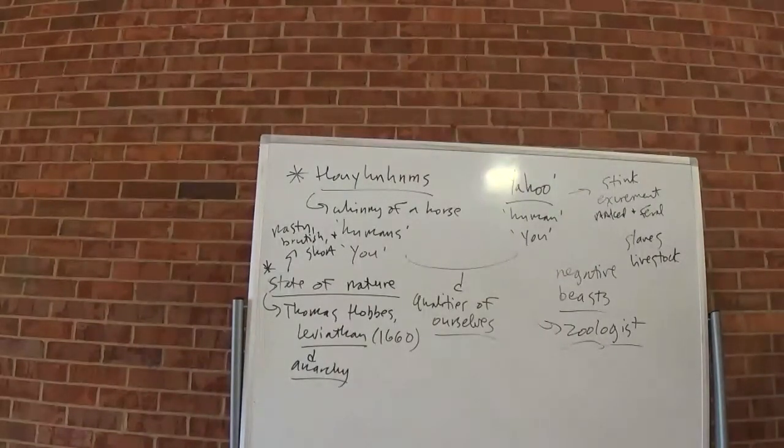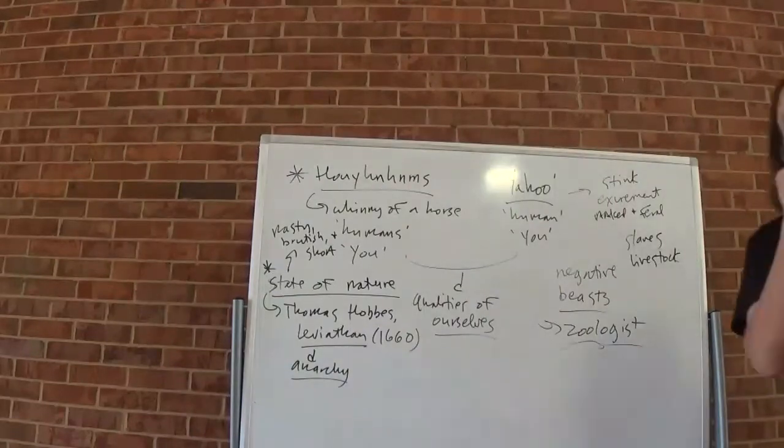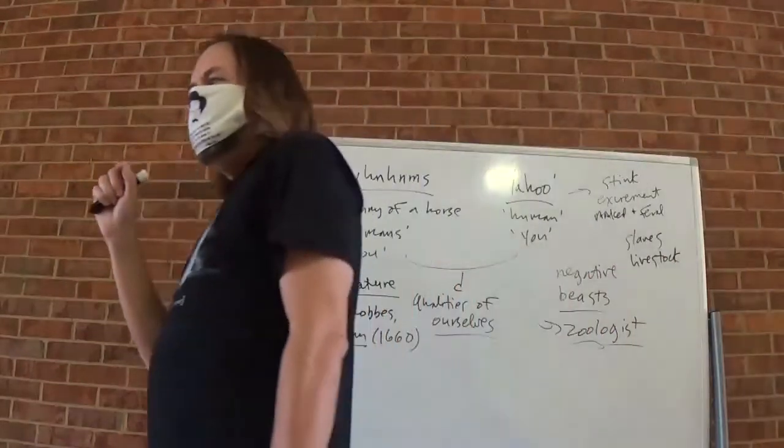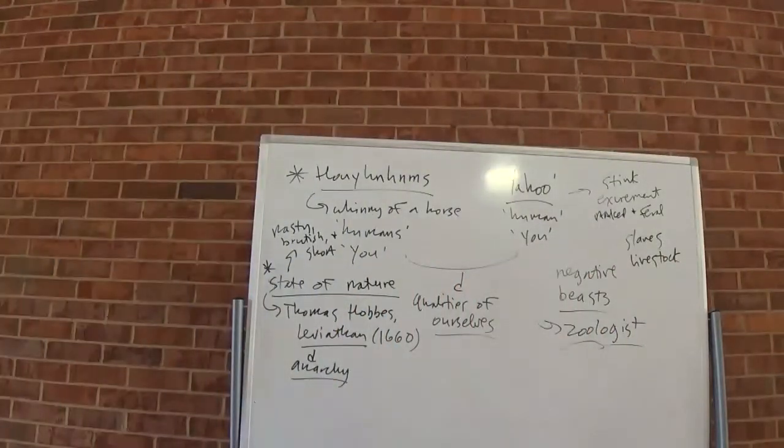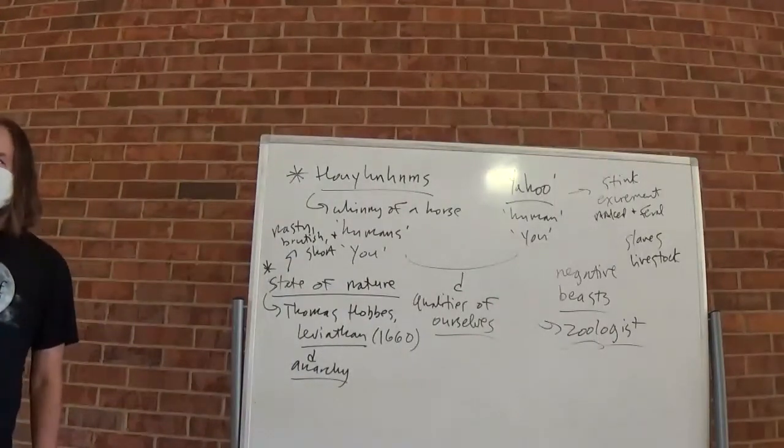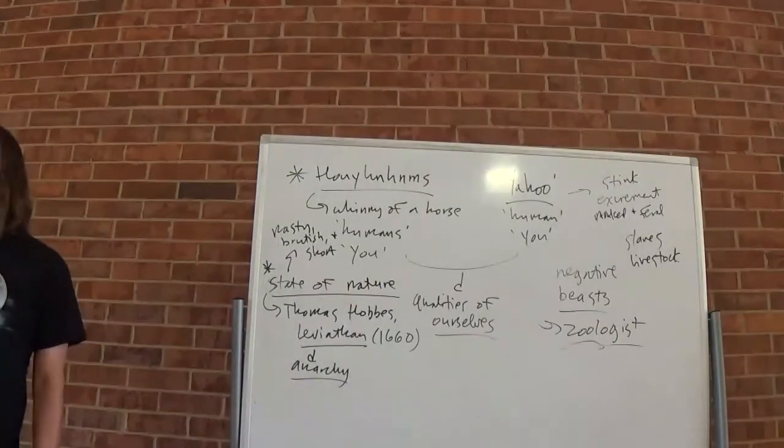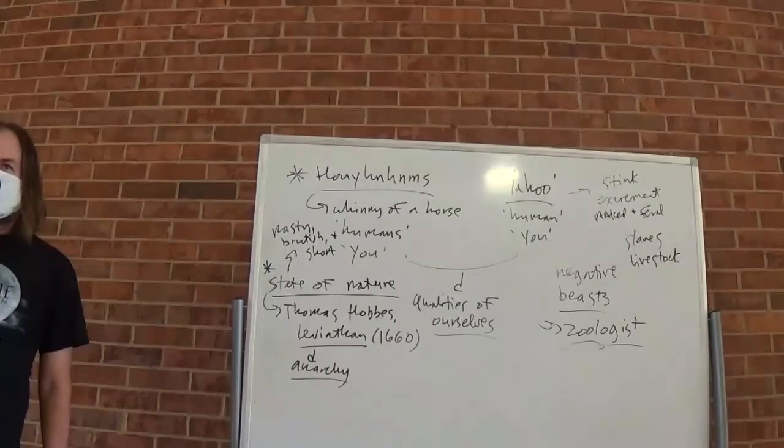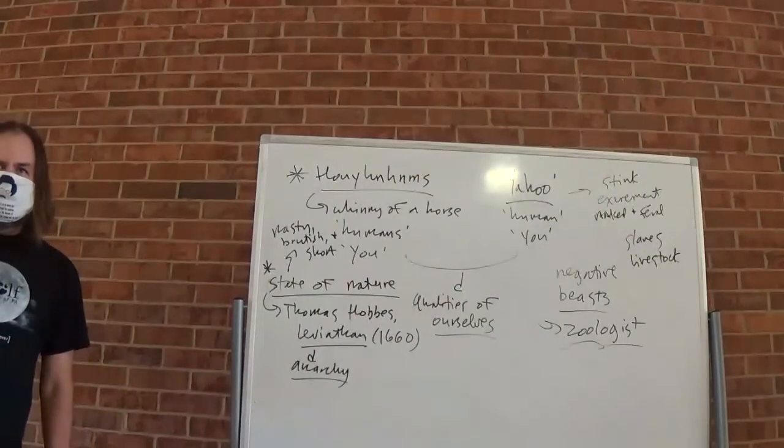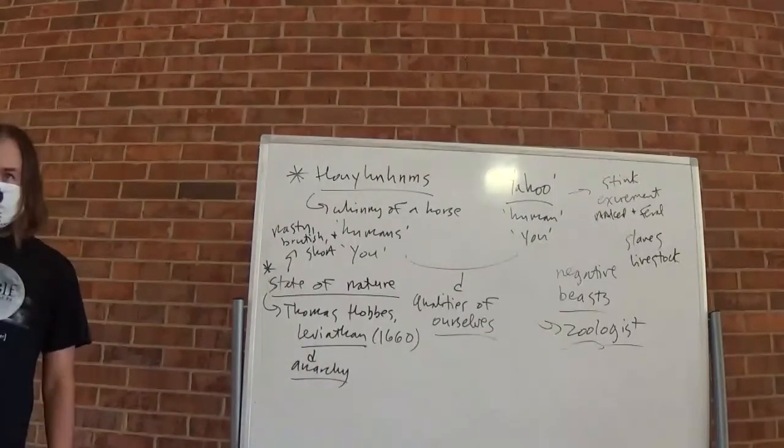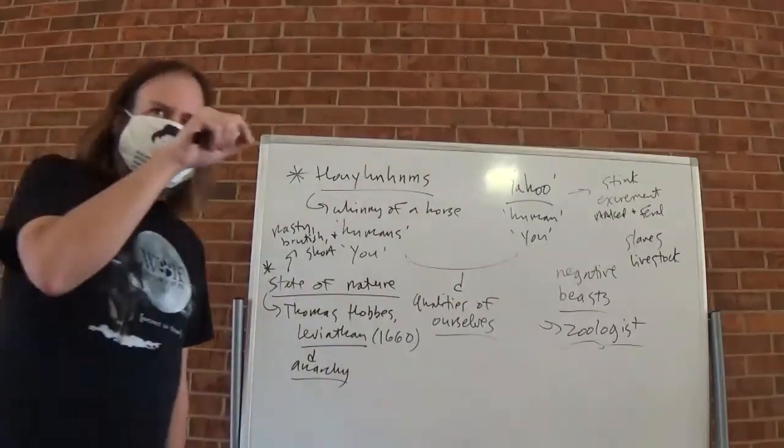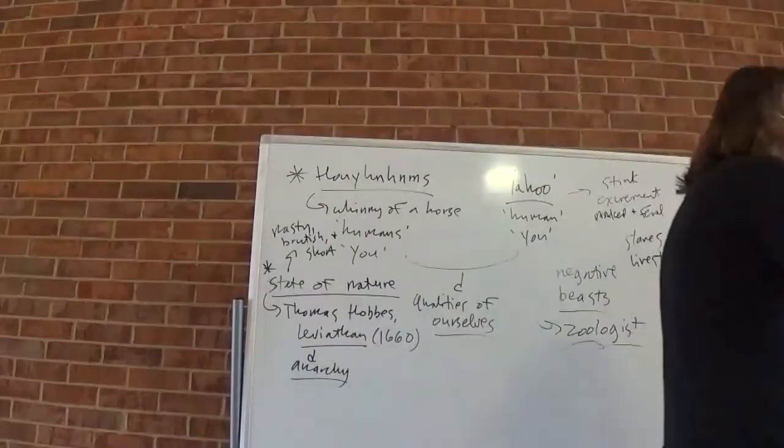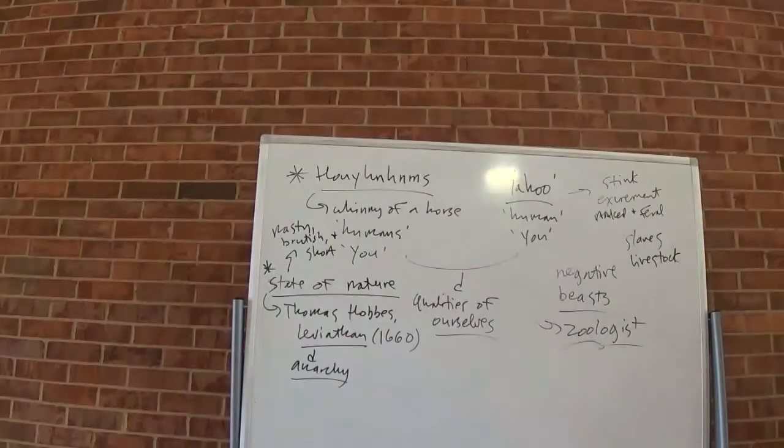So what is the source of Gulliver's horror here? That it looks almost human, but not quite. That he is recognizing himself in this creature. It had to be pointed out to him. But now that it has been, he sees it. And is disgusted. So the idea is that it's abject. Exactly.